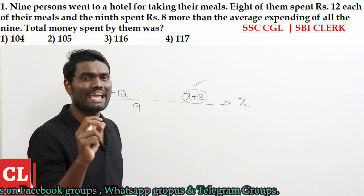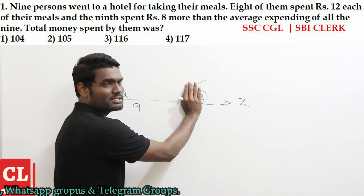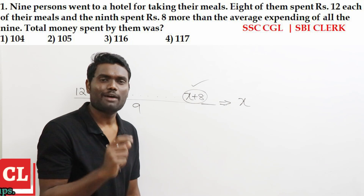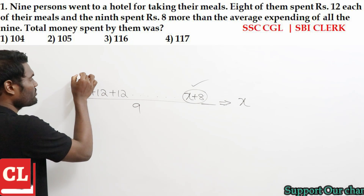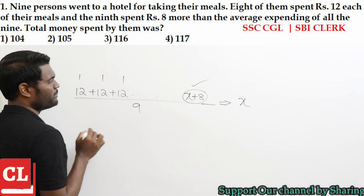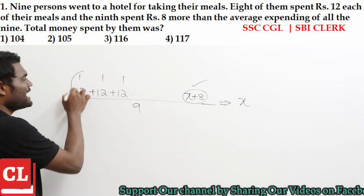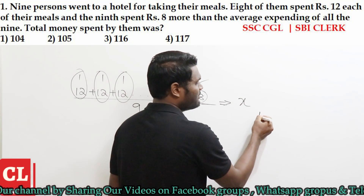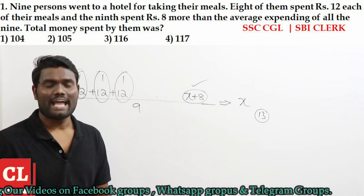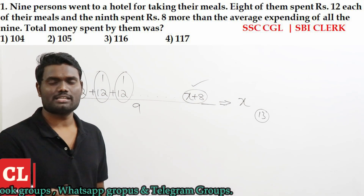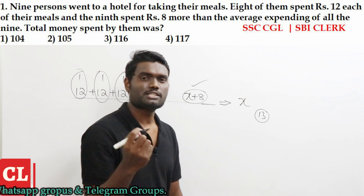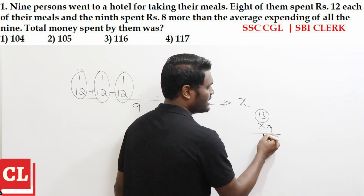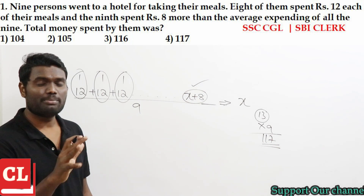If I distribute this 8 rupees for all the remaining persons — removing the 9th person, the remaining are 8 persons — then 8 rupees distributed among 8 persons gives each person 1 rupee. So each of them will now have 12 plus 1, which is 13. We can say the average is 13.